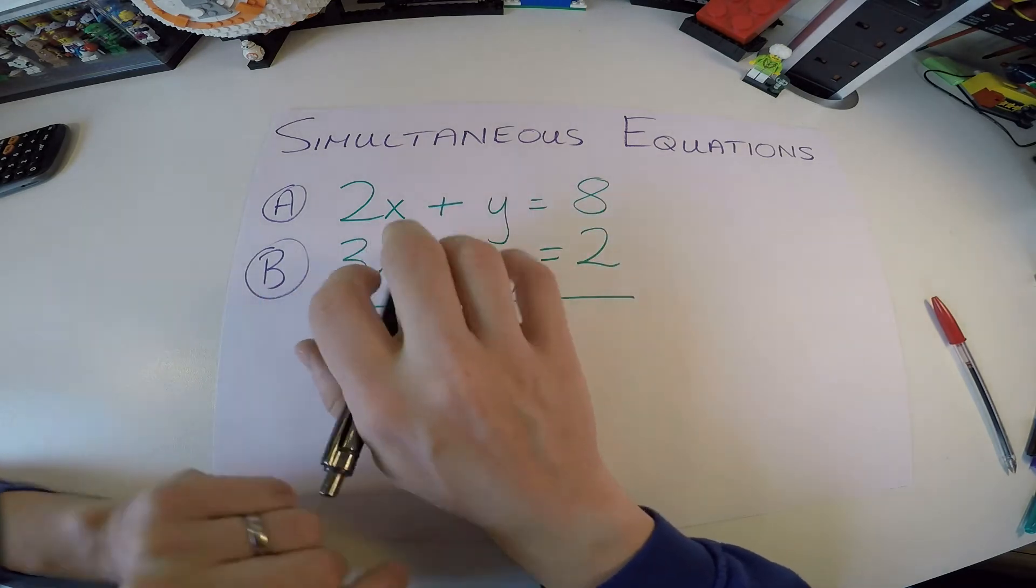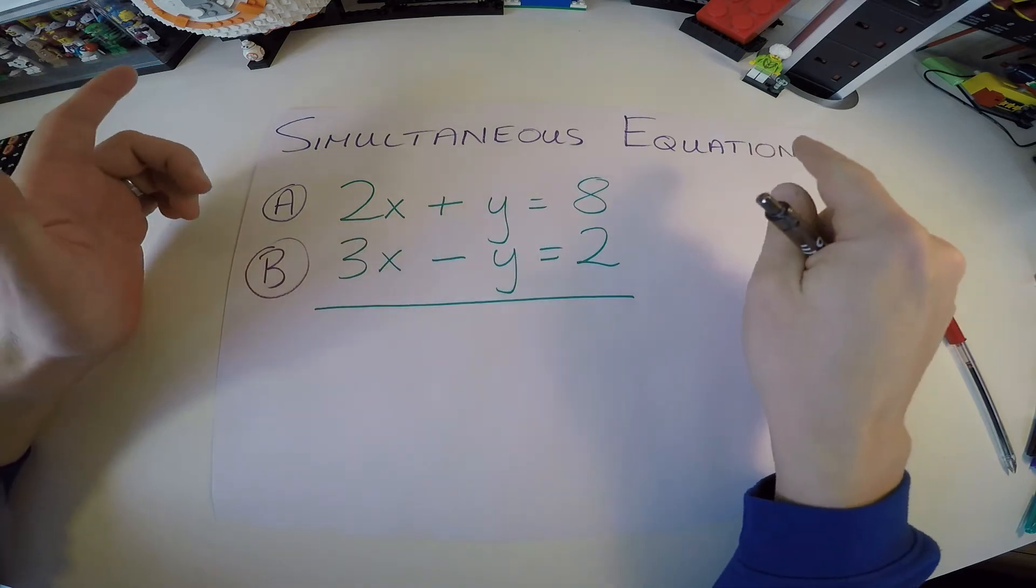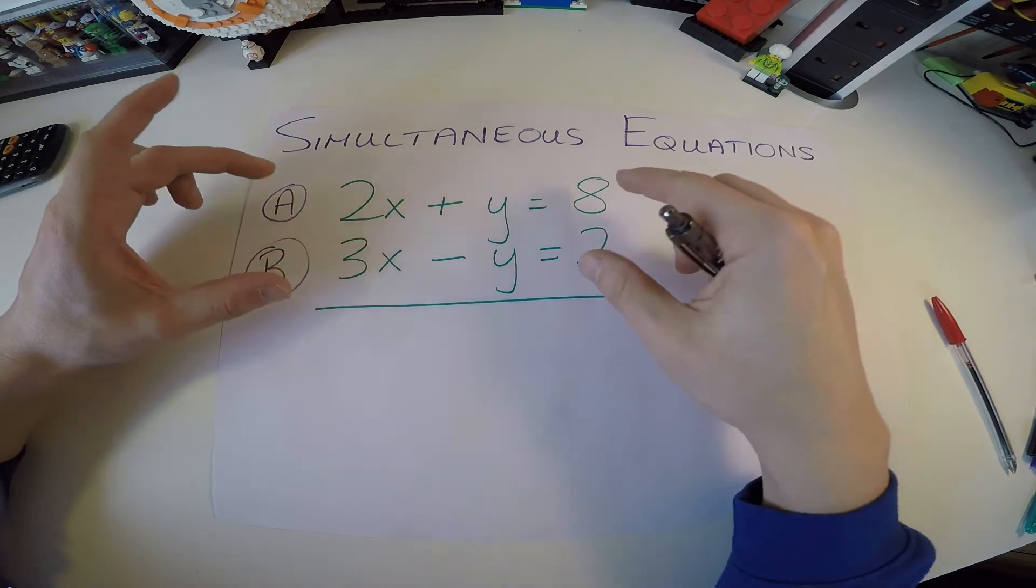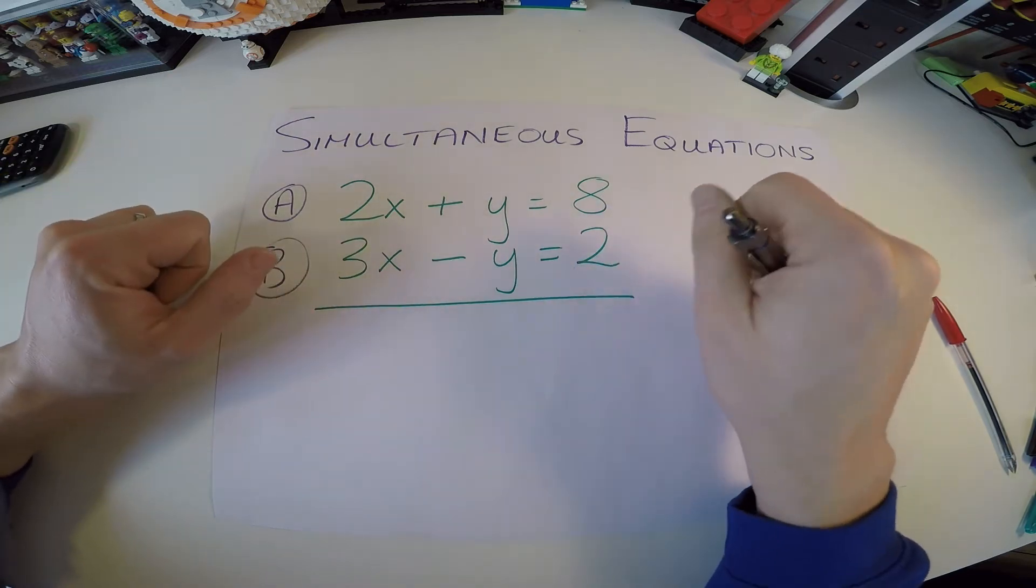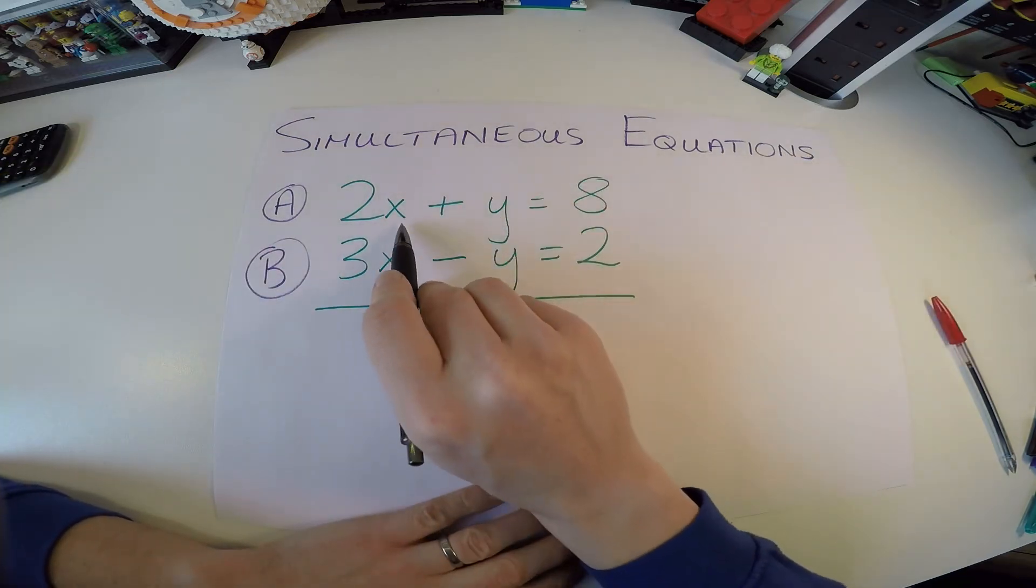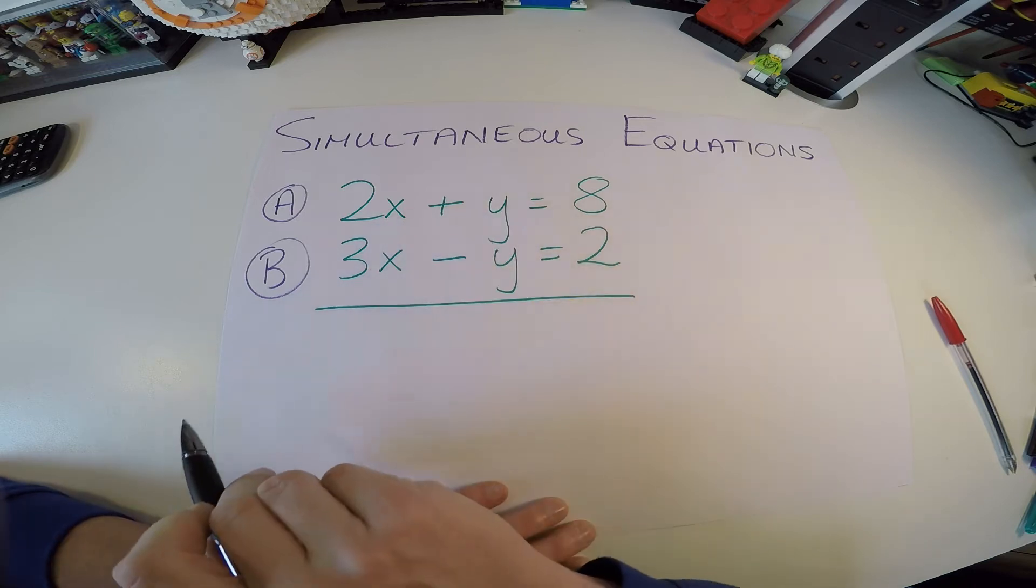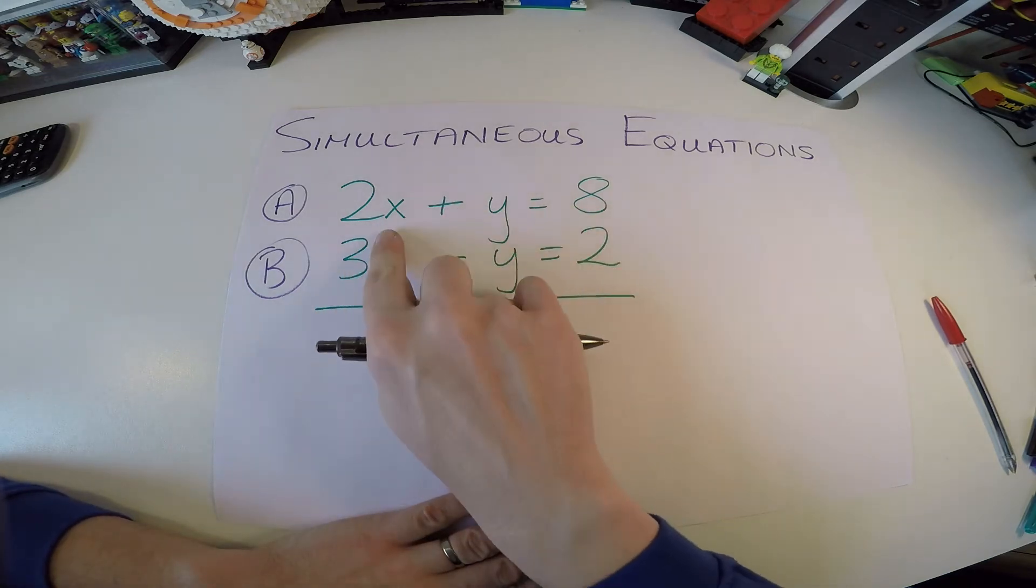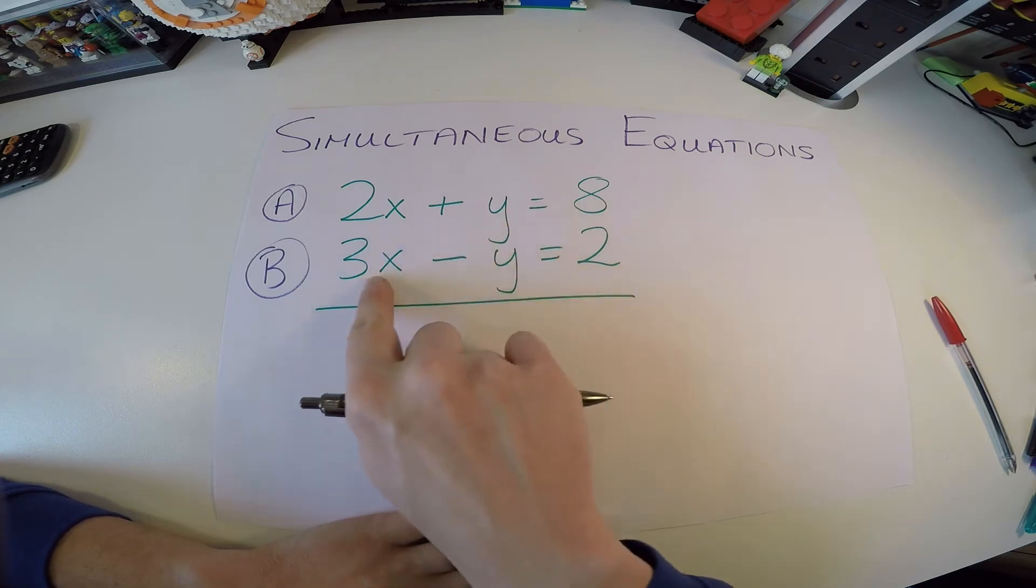One rule of thumb first is this: if there are two unknowns, two variables, we need two equations, which we have here. What this means is there's a number that exists for x and a number that exists for y, that if you sub it into this equation it works, but the same number for x and the same number for y also solves this equation.